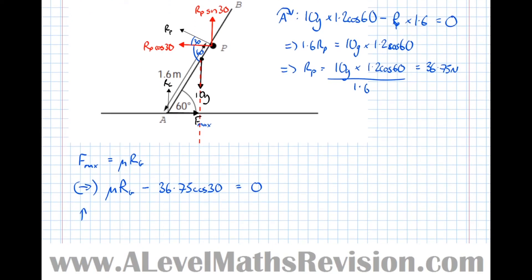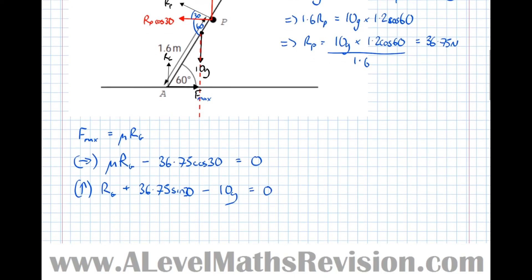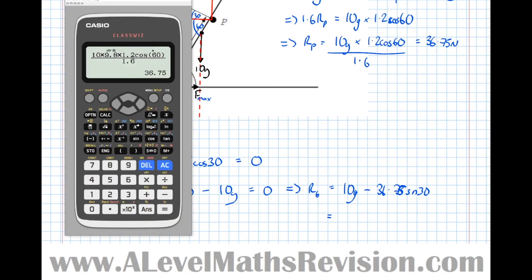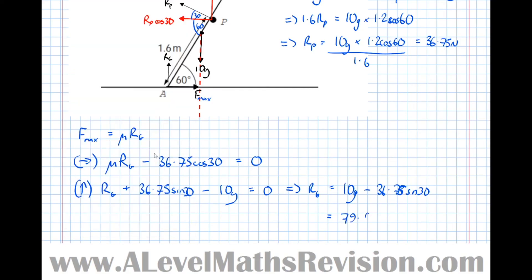Resolving vertically, going upward we have RG plus Rp sin 30, which is 36.75 sin 30, and taking forces going downward gives 10G. Setting this equal to zero: RG = 10G − 36.75 sin 30, which equals 637/8 or 79.625 newtons.